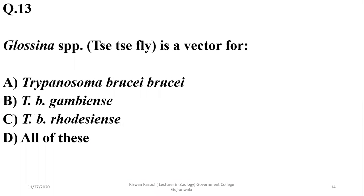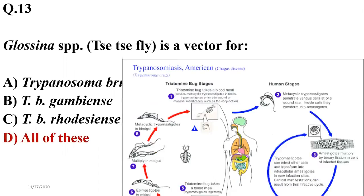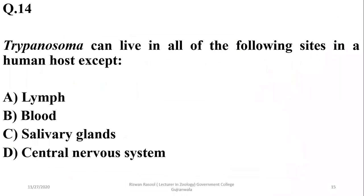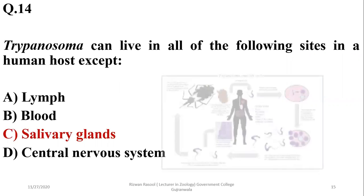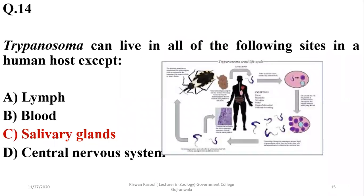Question thirteen: Glossina species, the tsetse fly, is a vector for almost all three types of Trypanosoma species, so the correct option is D. Question fourteen: Trypanosoma can infect lymph, blood, and the central nervous system in the human host, but is not found in the salivary glands. So the correct option is C.